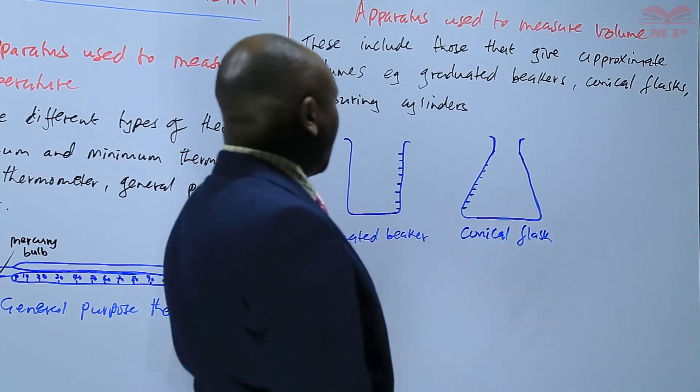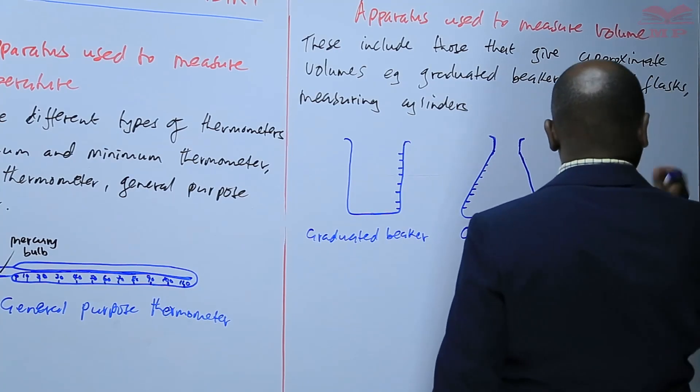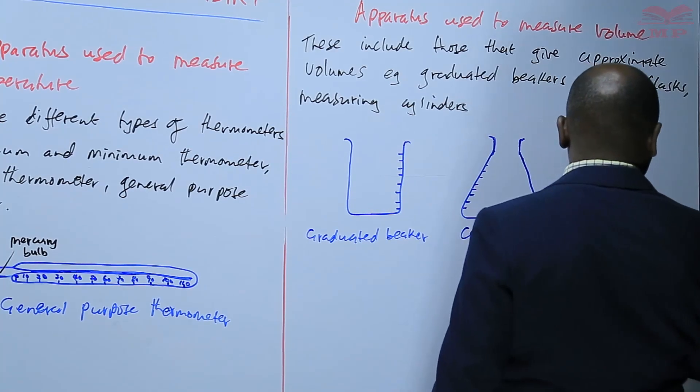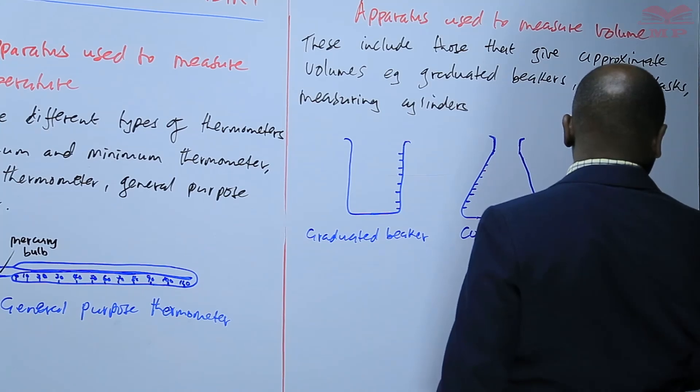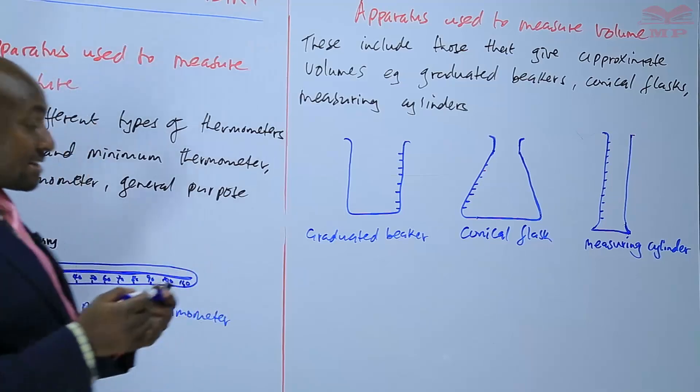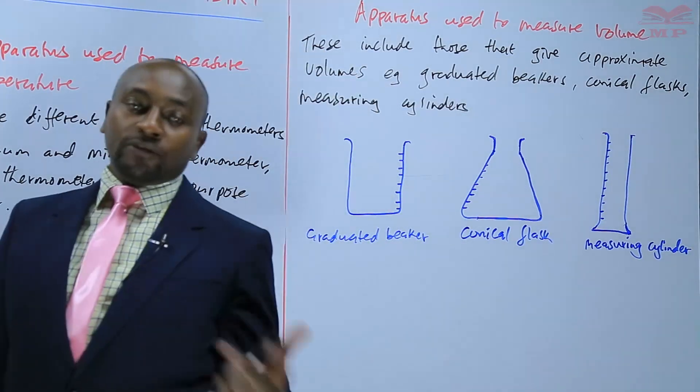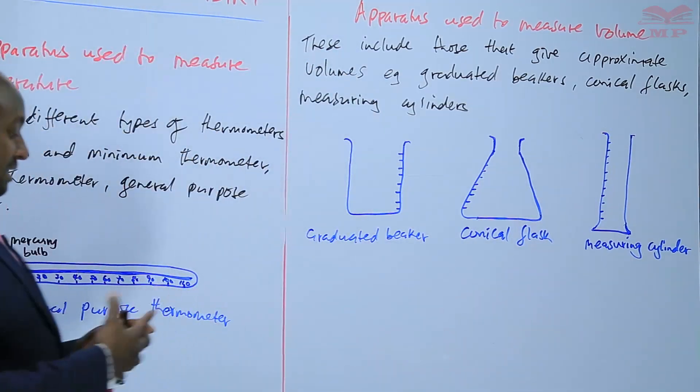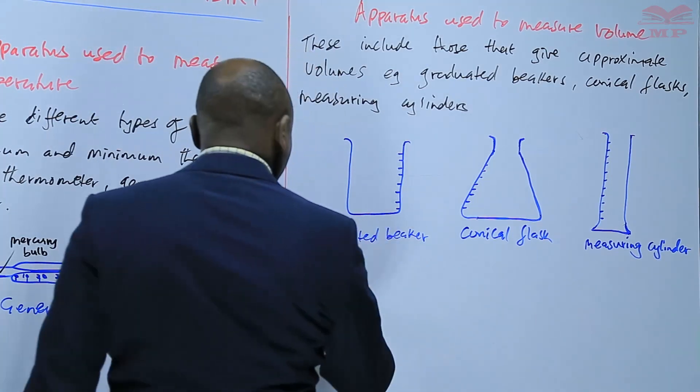We have measuring cylinders. So for measuring cylinders, we have different sizes. Some can measure up to 10 cubic centimeters, others up to 50 cubic centimeters, and so on.